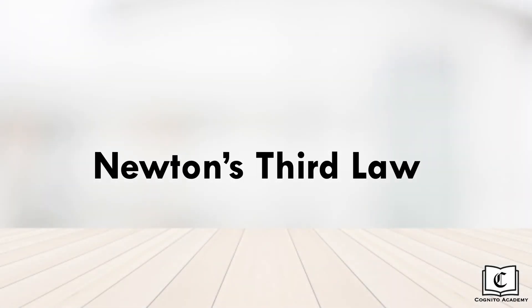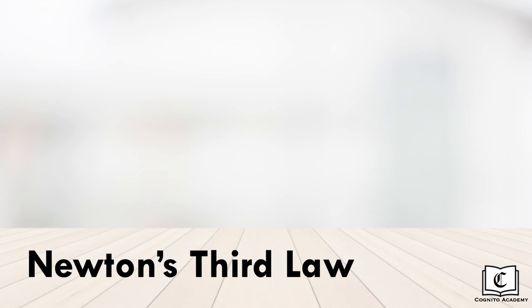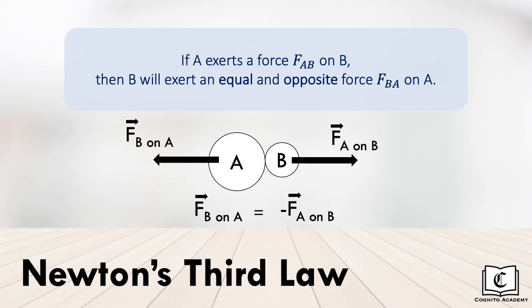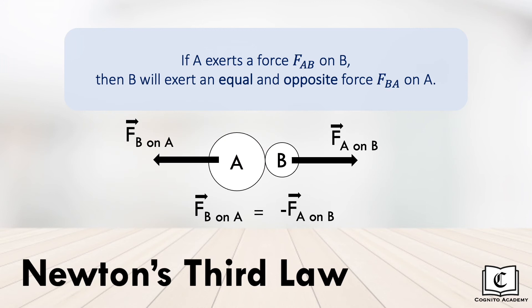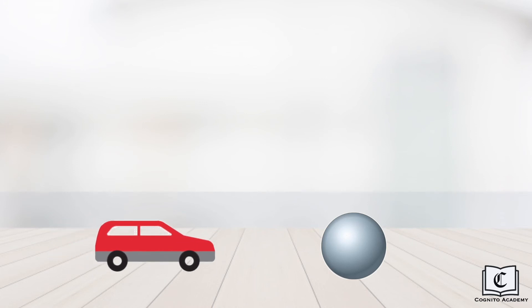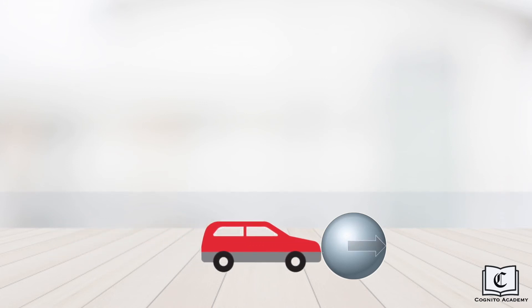Newton's third law of motion states that if body A exerts a force on body B, body B will exert an equal and opposite force back on body A. In layman terms, if board A exerts a force towards the right on board B, board B will exert an equal and opposite force towards the left back on board A. These two forces are called action-reaction forces. In a scenario where a car drives towards a ball and collides with it, the two arrows show the action-reaction forces.